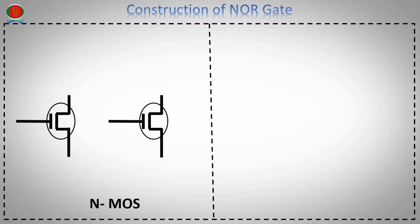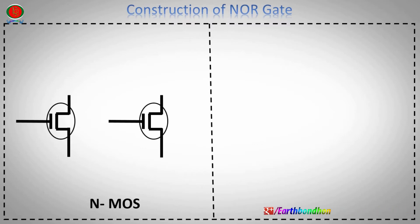The MOSFET — Metal Oxide Semiconductor Field Effect Transistor — is a semiconductor device. We will look at the NMOS transistor, also known as the N-Channel MOSFET transistor.